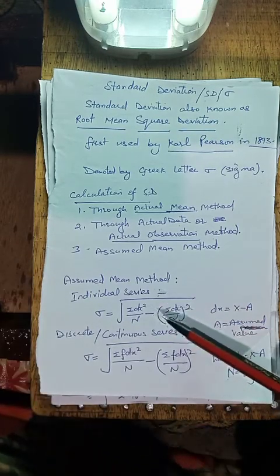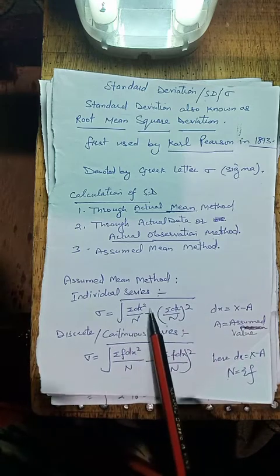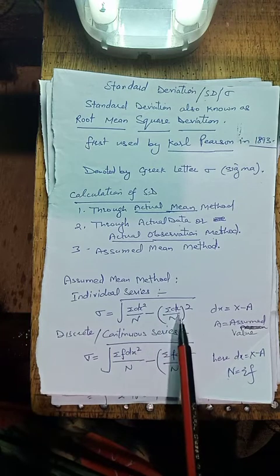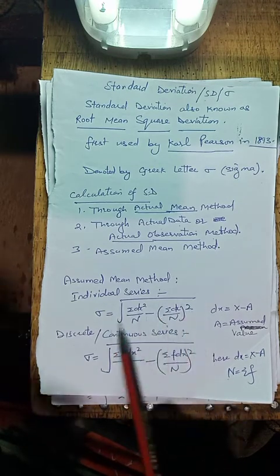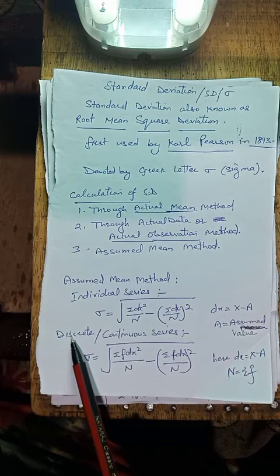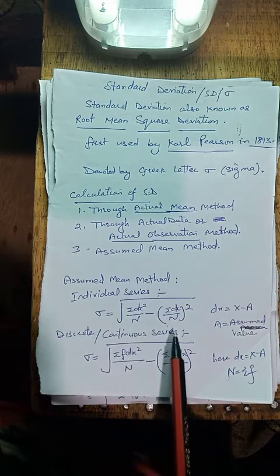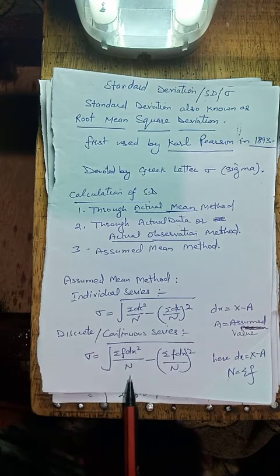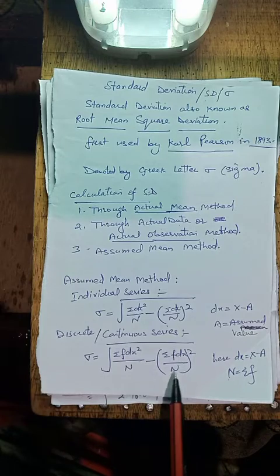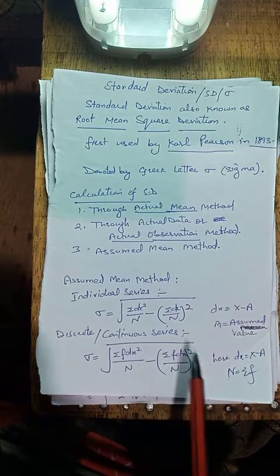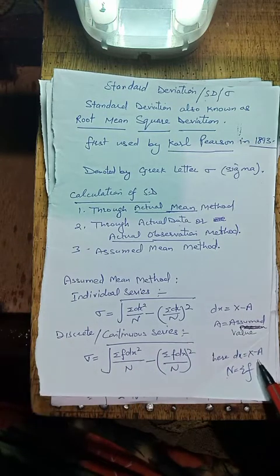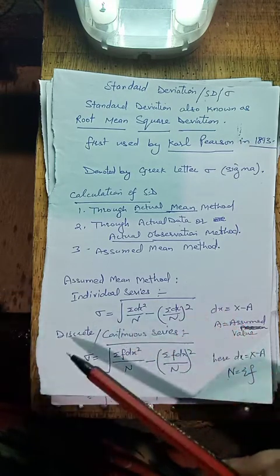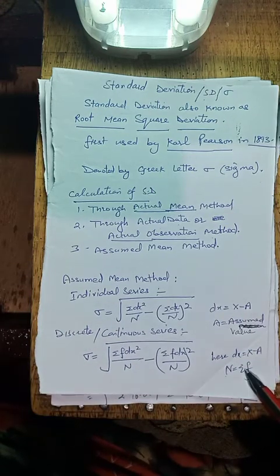In case of individual series, the formula is: square root of (summation dx² / n) minus (summation dx / n) whole square. In case of discrete and continuous series, the formula is: square root of (summation f·dx² / n) minus (summation f·dx / n) whole square. Here, dx means x minus a.